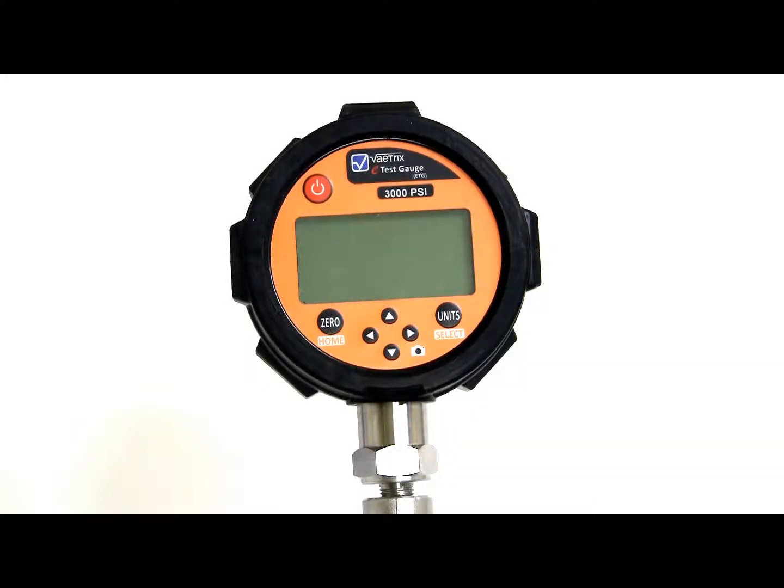Hi, this is Jason Duarte with VATRIX, and today we're going to cover the basic features and operations on this VATRIX ETG gauge. So the VATRIX ETG is available in two accuracies, 0.05 and 0.1%. So let's get started.